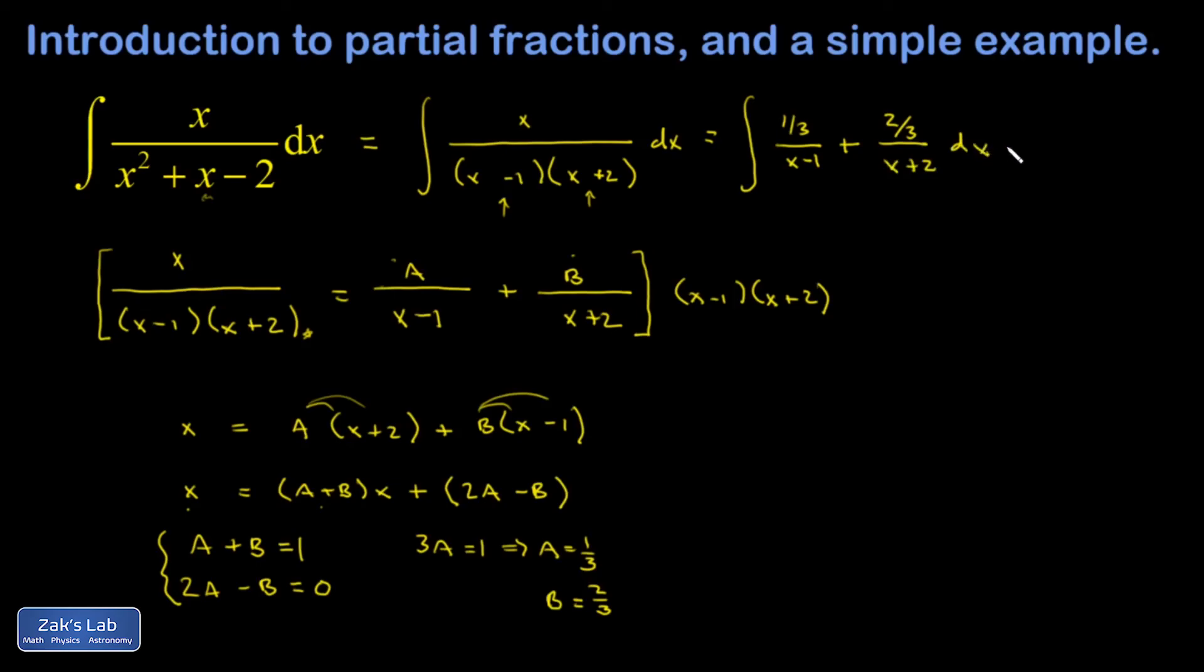And each of those pieces is easy to integrate - they're both just the natural log of the thing you see in the denominator. So I end up with one-third natural log of the absolute value of (x minus 1) plus two-thirds natural log of the absolute value of (x plus 2) plus an arbitrary constant of integration.